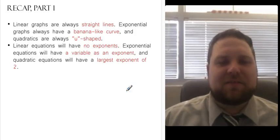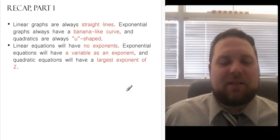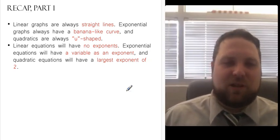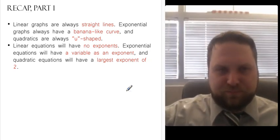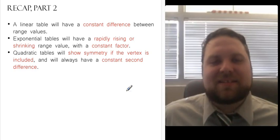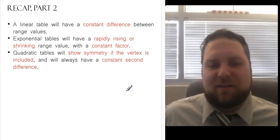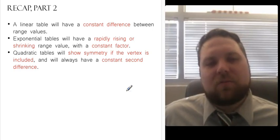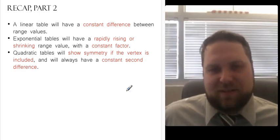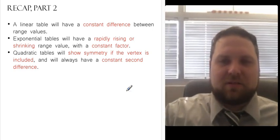So to sum up, linear graphs, always straight lines. Exponential graphs have that banana-like curve, and quadratics are always that U-shaped parabola. Linear equations don't have exponents. Exponential equations do have exponents, and the variable will be in the exponent. And for quadratic equations, you'll have a largest exponent of two. If we're looking at a linear table, we want a constant difference. That is, we're adding or subtracting the same number each time. Exponential tables will get big really fast or small really fast, and they'll have a constant factor. I'm multiplying or dividing by the same number over and over again. Quadratic tables will show symmetry if the vertex is included in the table, and they'll always have that constant second difference. So now I should be able to give you any of those and ask you to identify which type of problem we're looking at. And study hard, work hard, meet with success.